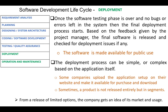The deployment process can be simple or complex based on the application itself. Some companies upload the application setup on their website and make it available for purchase and download. Sometimes a product is not released entirely, but in segments. This is referred to as user acceptance testing, UAT. From a release of limited options, the company gets an idea of its market and usage.